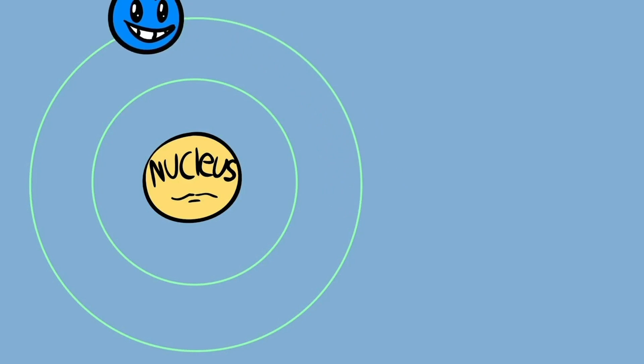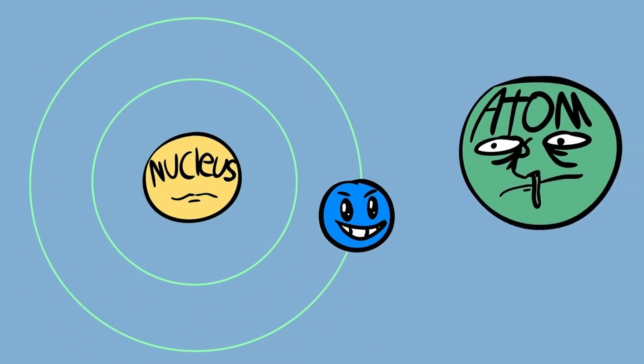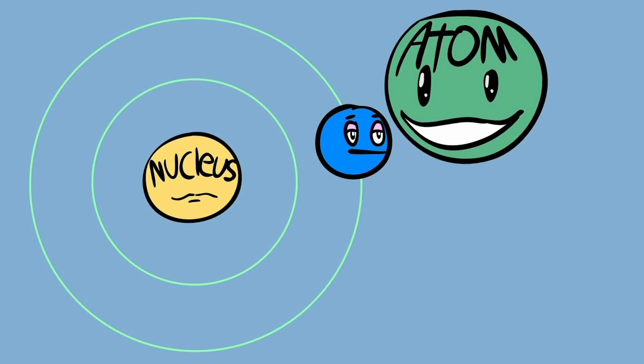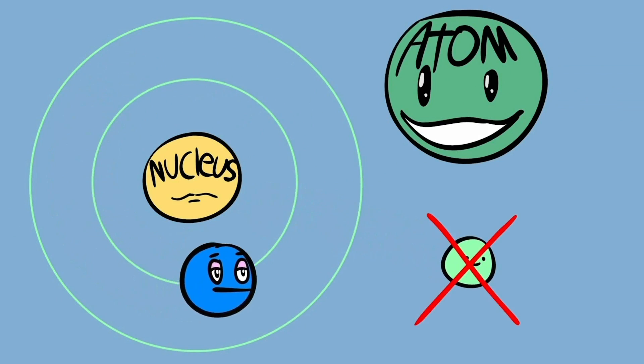Electrons can also relax down to lower orbitals by collision with other atoms too. Sometimes an electron in a higher energy state can transfer some energy to an incoming electron by bumping into it. Because it's given some of its energy away, it relaxes down.